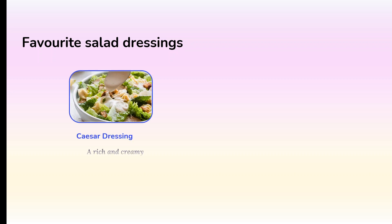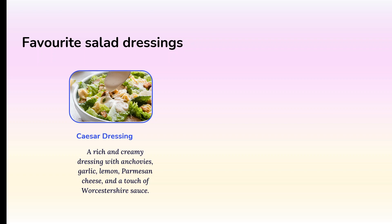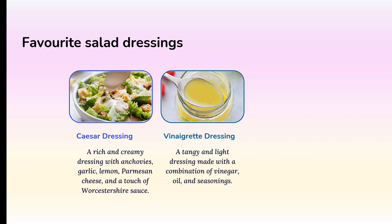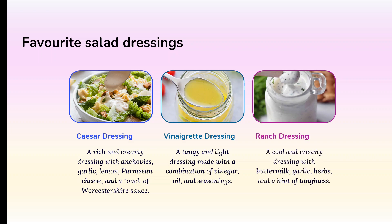Some favorite salad dressings: Caesar dressing is a rich and creamy dressing made with anchovies, garlic, lemon, Parmesan cheese and a touch of Worcestershire sauce. Vinaigrette dressing is a very tangy and light dressing made with a combination of vinegar and oil and seasoning, in a ratio of three parts oil to one part vinegar. Ranch dressing is a cool and creamy dressing made with buttermilk, garlic, herbs and a hint of tanginess.